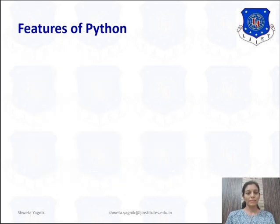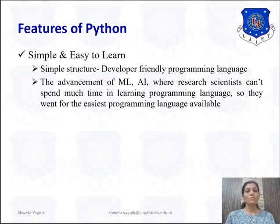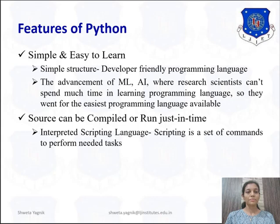The features of Python: it is simple and easy to learn, with a simple structure, making it a developer-friendly programming language. In the advancement of machine learning and AI, research scientists who cannot afford time to learn a specific programming language chose Python as the easiest option. The source can be compiled or run just-in-time, so Python is both a compiled and interpreted language.